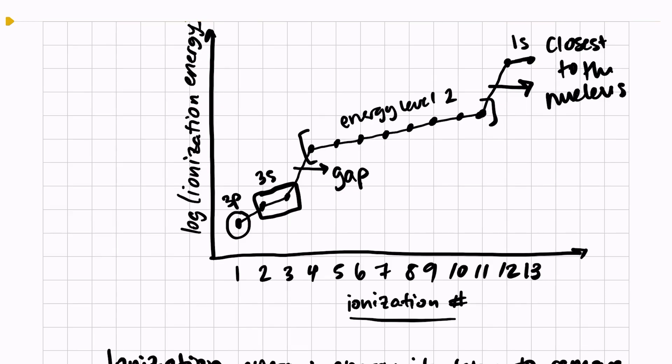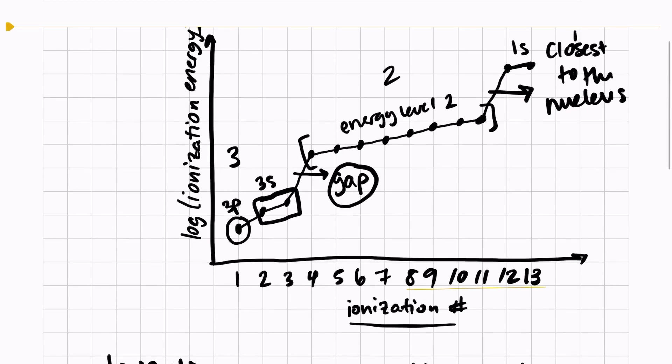Those are the closest electrons to the nucleus, and again, what this graph is showing us is that it takes more energy each time we remove an electron, and there are predictable gaps when we jump an energy level. So here's energy level 3, 2, and 1. I can use this data to predict what group an element will be in.